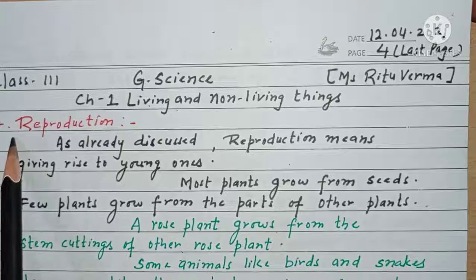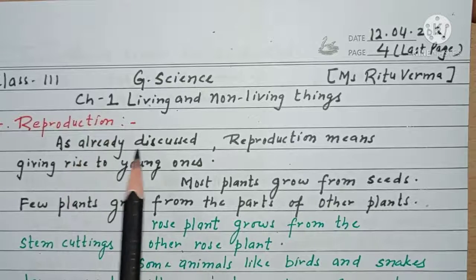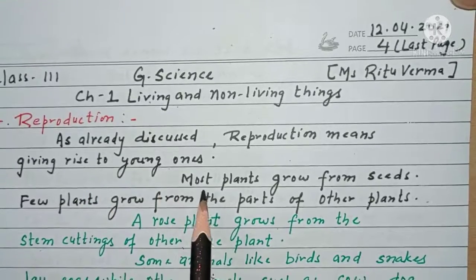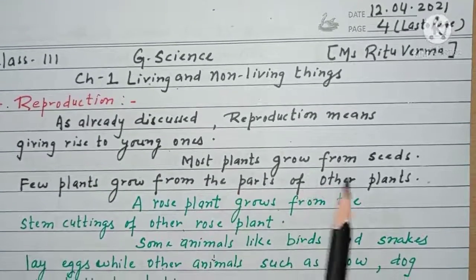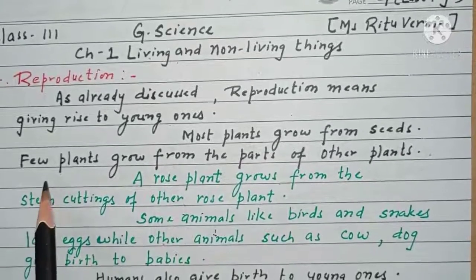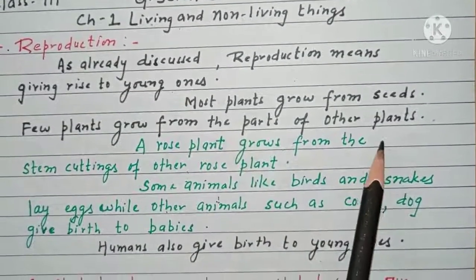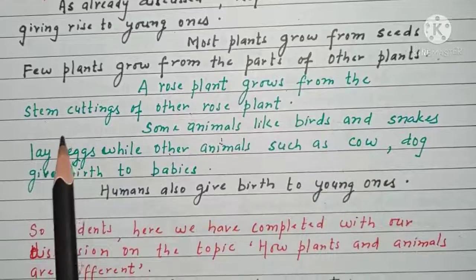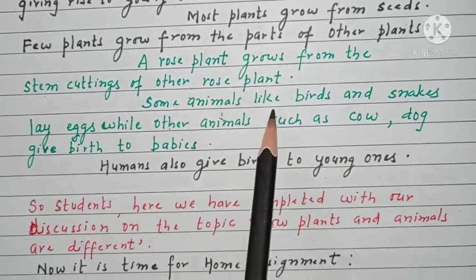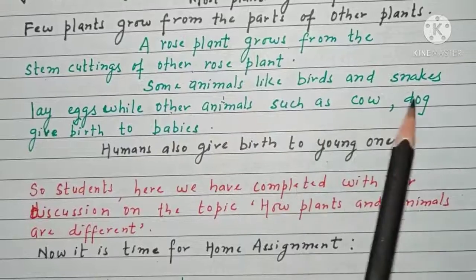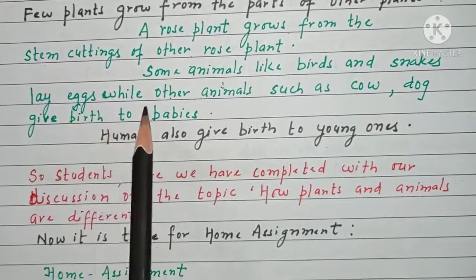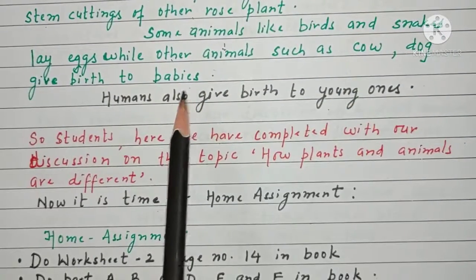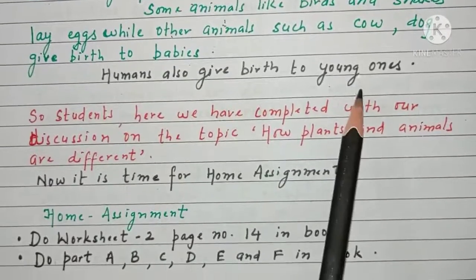The most important factor now is reproduction. Reproduction means giving rise to young ones. Most plants grow from seeds, and few plants grow from the parts of other plants. A rose plant, as you must have commonly seen, grows from the stem cuttings of another rose plant. Some animals like birds and snakes lay eggs, while other animals such as cow and dog give birth to babies. Human beings also give birth to young ones.